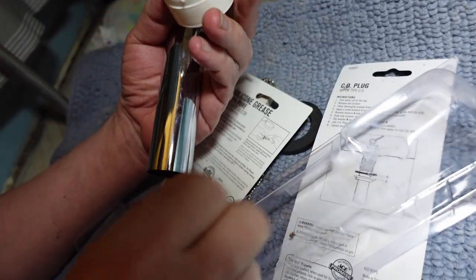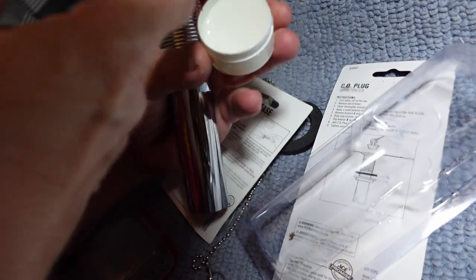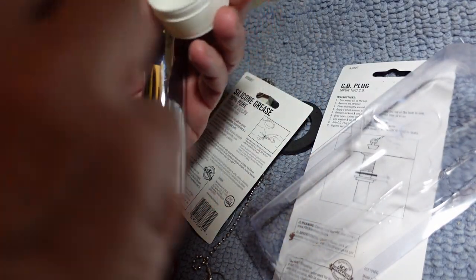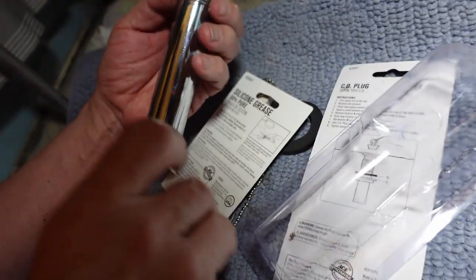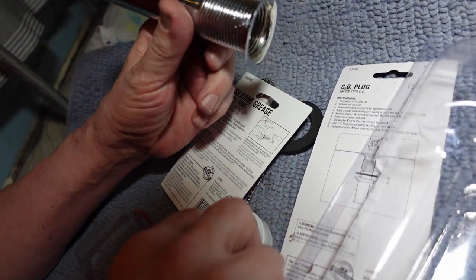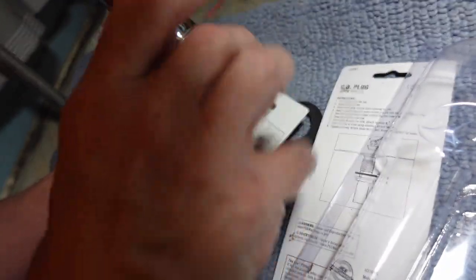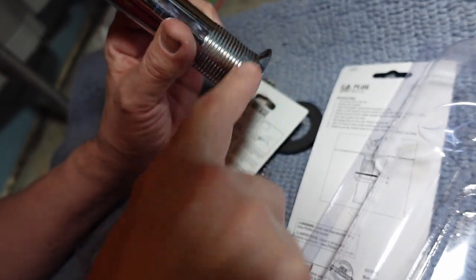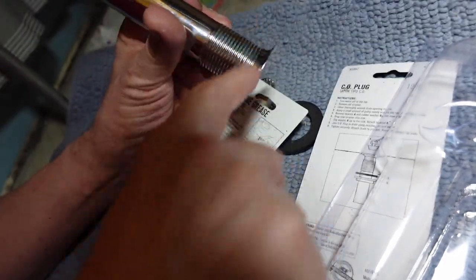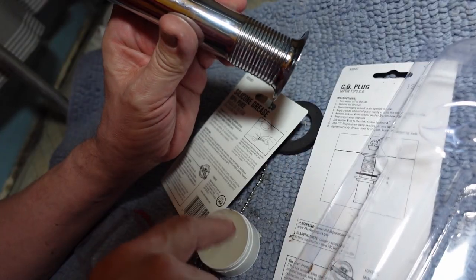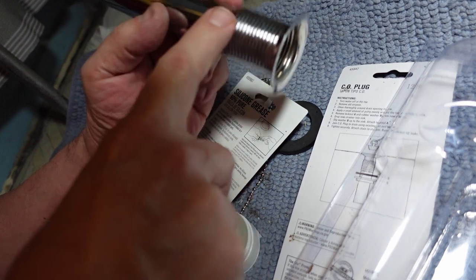There's also plumber's putty. I tend to like this because it's very thin and it's more waterproof and doesn't hurt either the metal or the ceramic of the sink. So I just put a nice thin little bead on there. I also like to put some on the threads, which makes it a little easier to put that washer on.